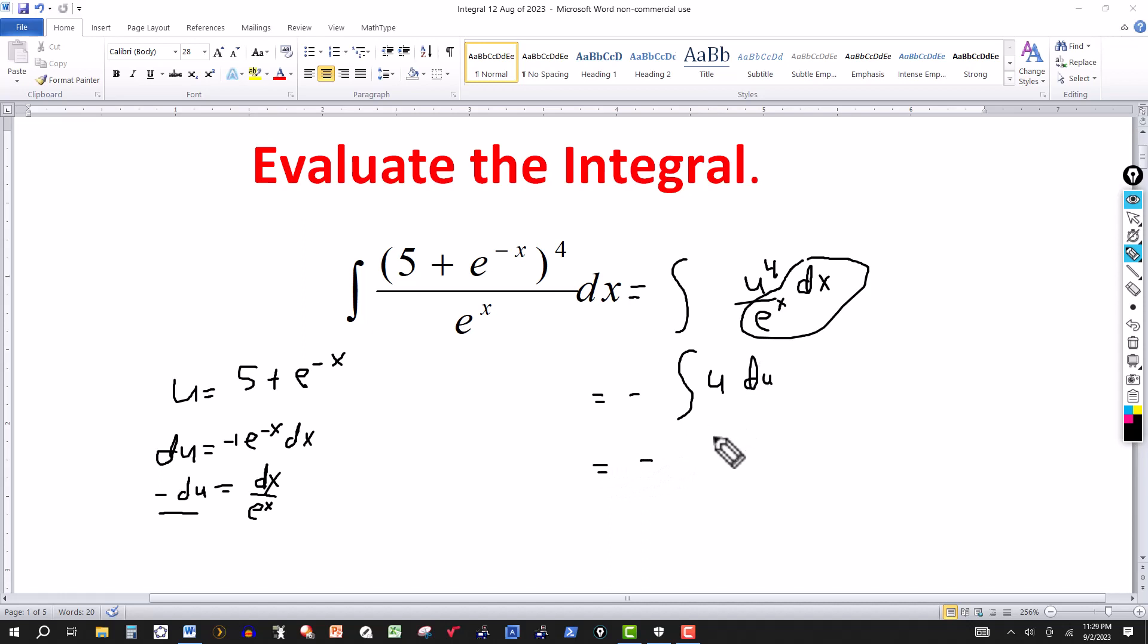And I just integrate with respect to u. This is a 4 here. So this becomes u to the fifth when we integrate with respect to u over 5 plus the constant of integration.